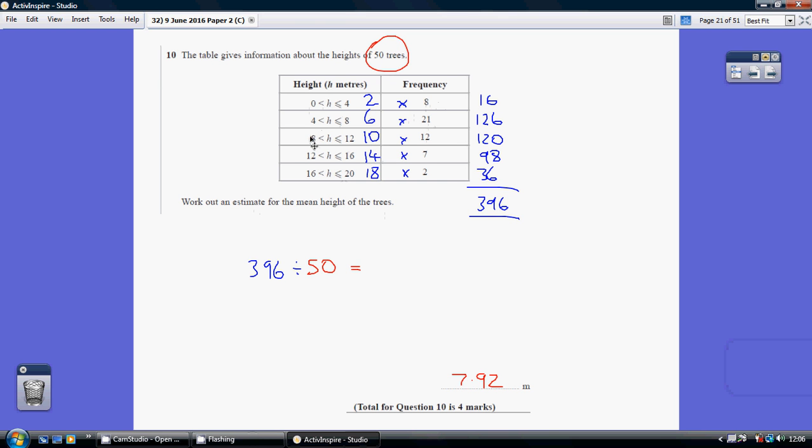If you can't just see it, how do you work out the midpoint? Add the two together and halve it. 8 and 12 is 20, half of 20 would be your 10.